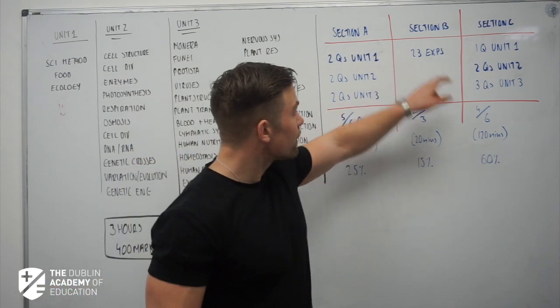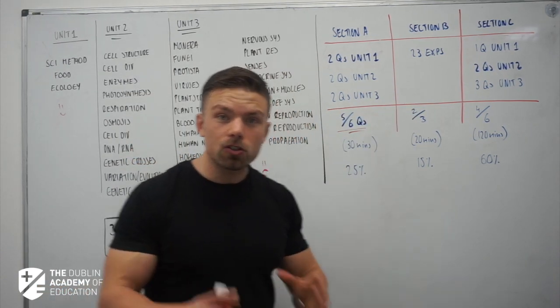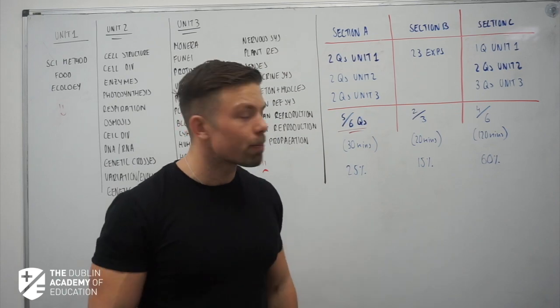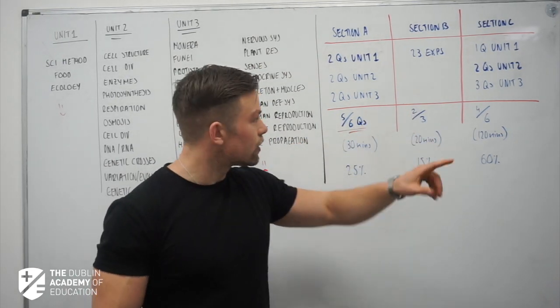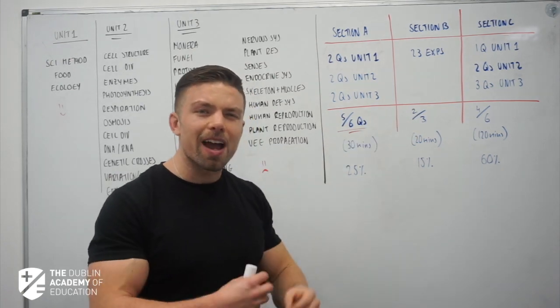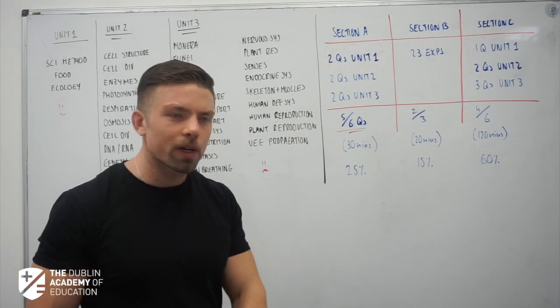For Section B we have 23 experiments. Again, there's a choice because there's only going to be three questions on your paper and you get to choose two of them. So there's only 23 and you get to choose two. We can also even nearly narrow it down when we look at the last couple of years' papers. That's worth 15%.